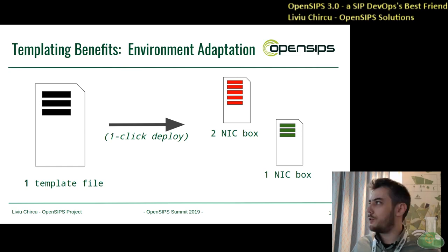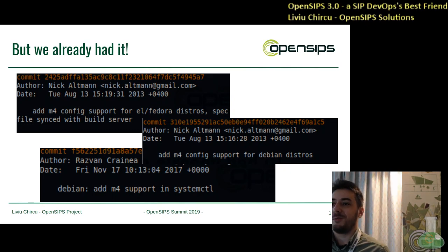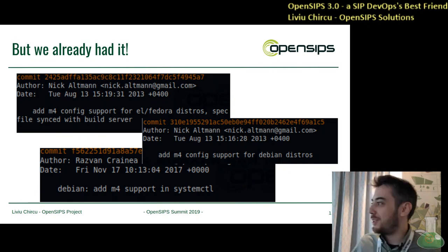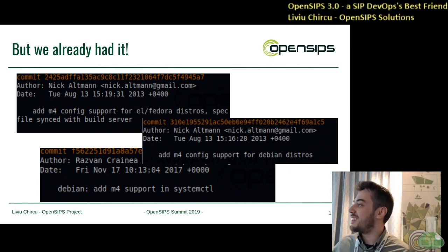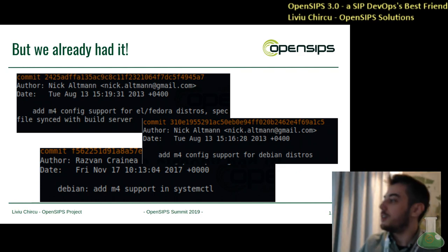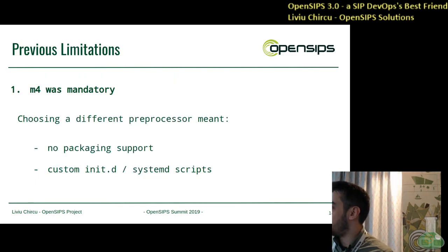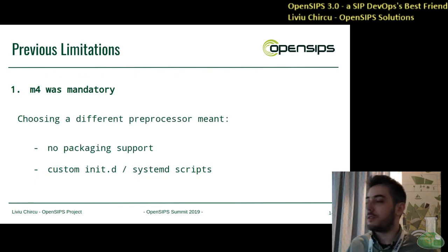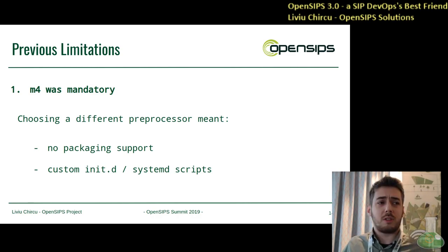You might argue we already had this — Nick actually did commits five years ago adding M4 support into the OpenSIPS packages. But as we went along and used it, we noticed some limitations. For example, you were stuck with M4. If you wanted to choose a different templating language, you would have no packaging support for it and would have to make some time investments in that area.